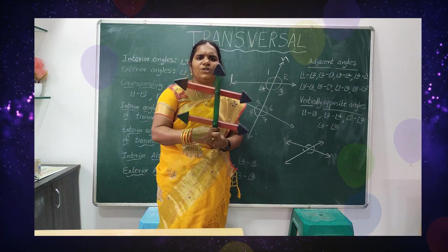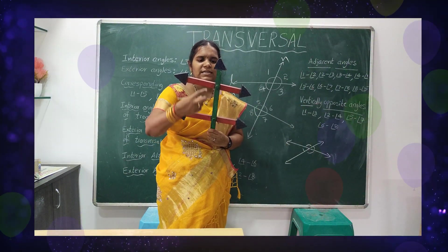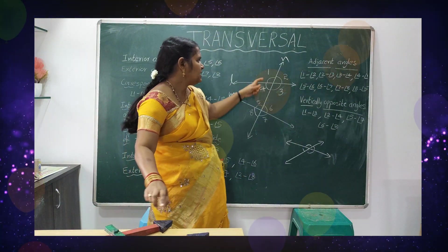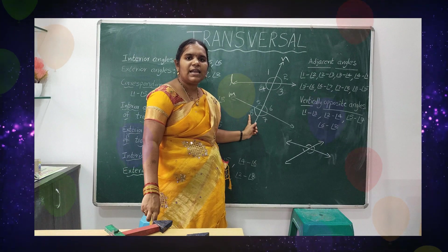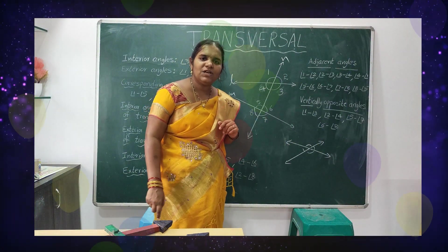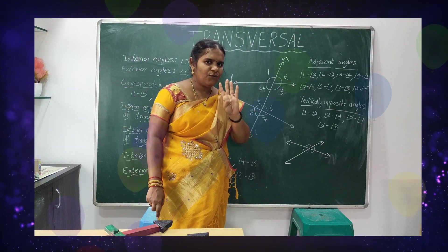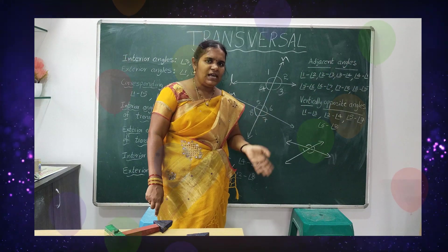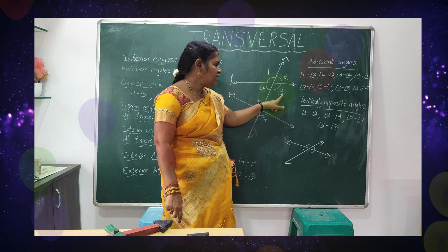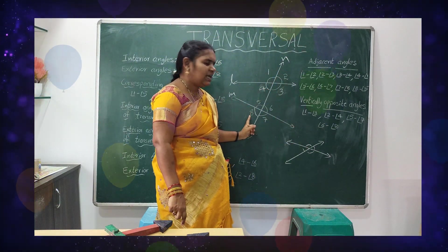Outside angles — the name we use in mathematics is exterior. The four exterior angles are one, two, seven, and eight. So when a transversal intersects two lines, we have four interior angles (three, four, five, six) and four exterior angles (one, two, seven, eight).